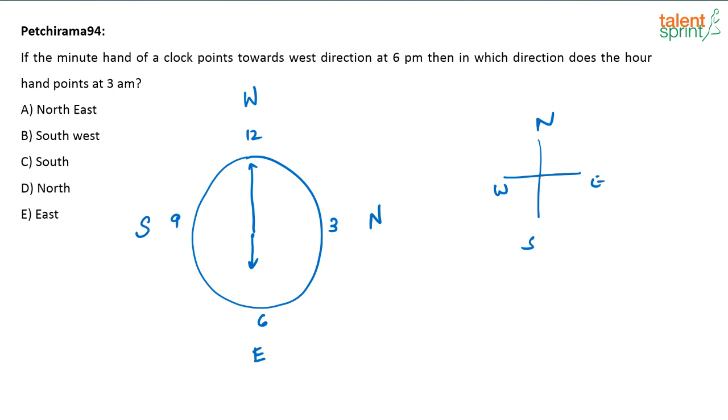Now, in which direction does the hour hand point at 3 a.m.? Hour hand at 3 a.m. will point towards 3, correct? At 3 a.m., so hour hand will point towards what? North, D. North is your answer.